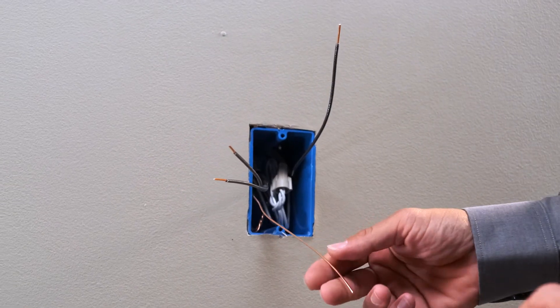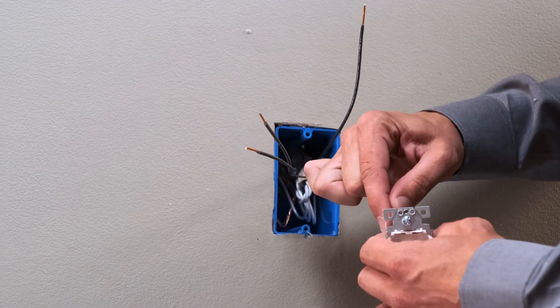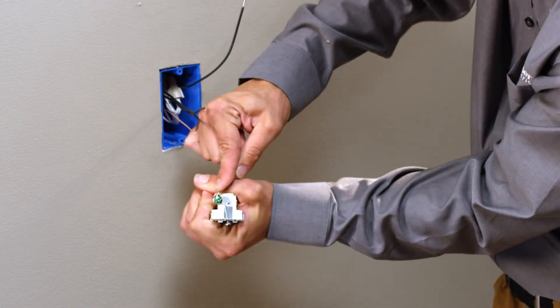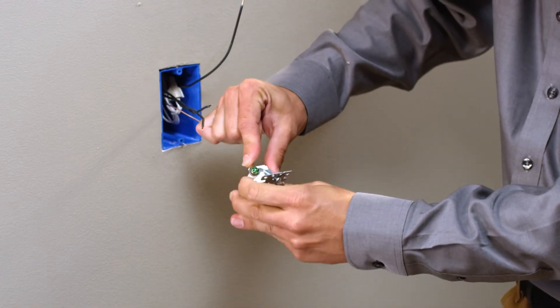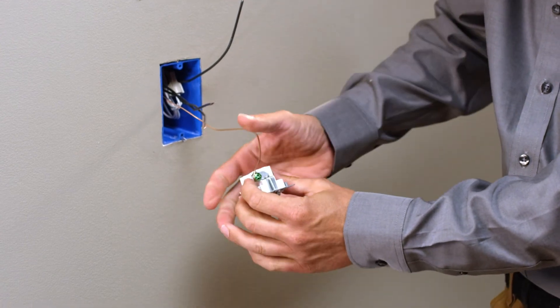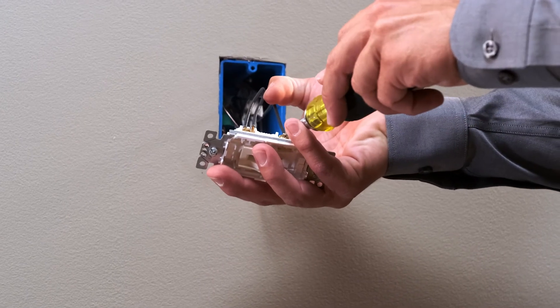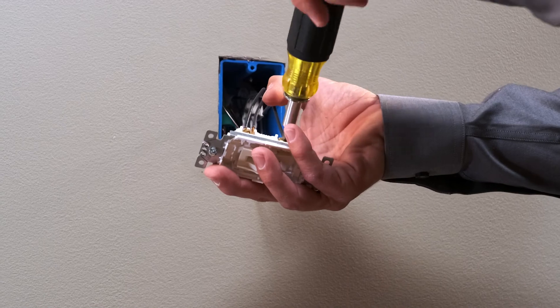First, make sure your neutral and ground wires are connected. Then, take a lead from the ground bundle and wire it to the green screw on the single-pole switch. Attach the hot and load wires to the terminal screws on the side.